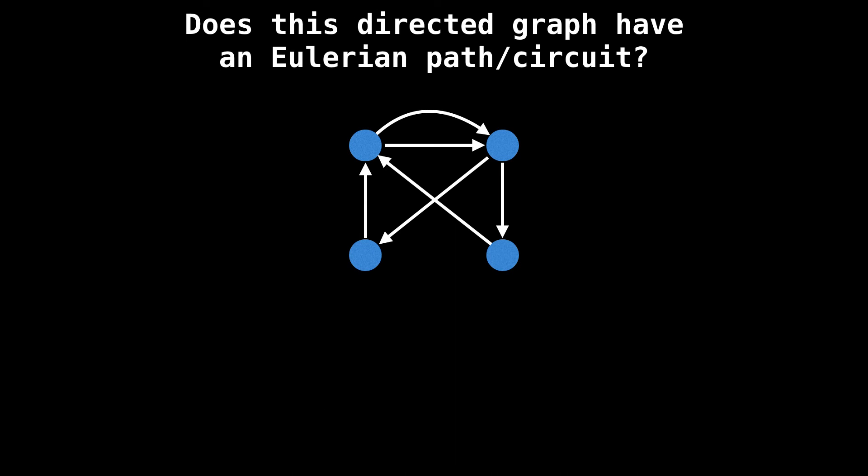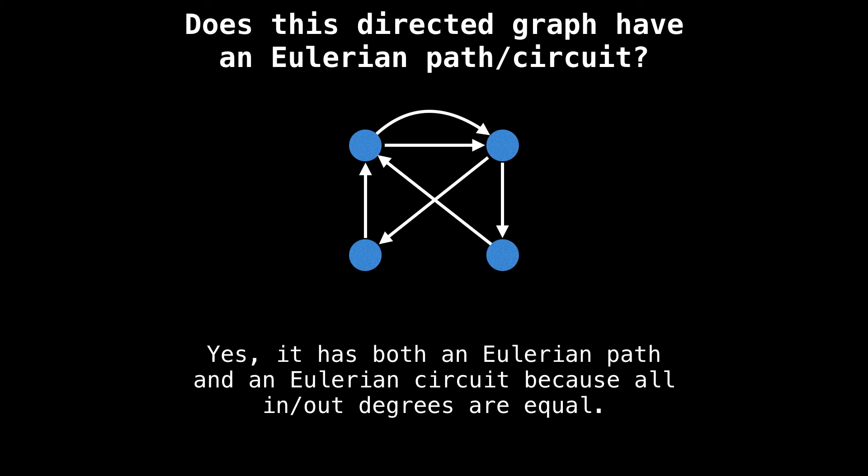Now let's have a look at an example with a directed graph. Does the following graph have any Eulerian paths or circuits? I'll give you a moment to think about it. Yes, this graph has both an Eulerian path and an Eulerian circuit because all in and out degrees are equal.